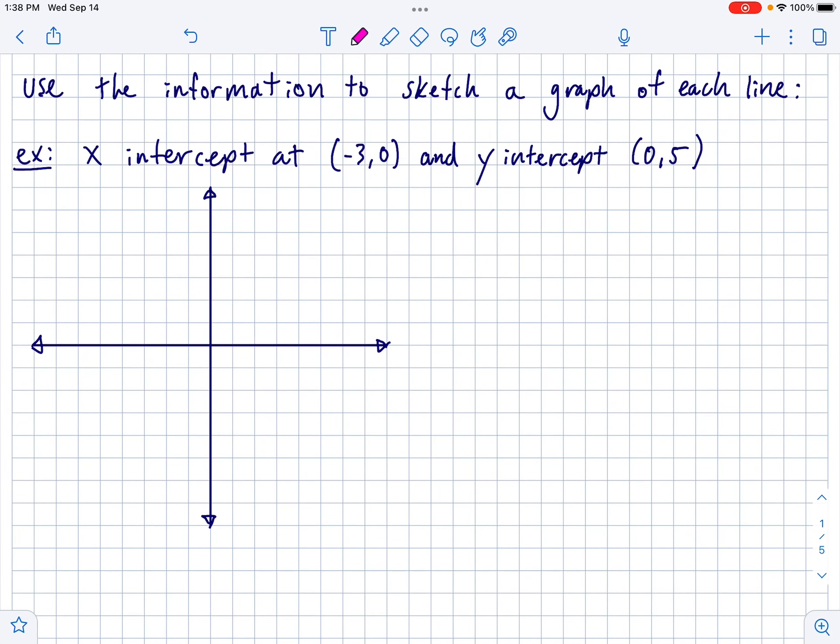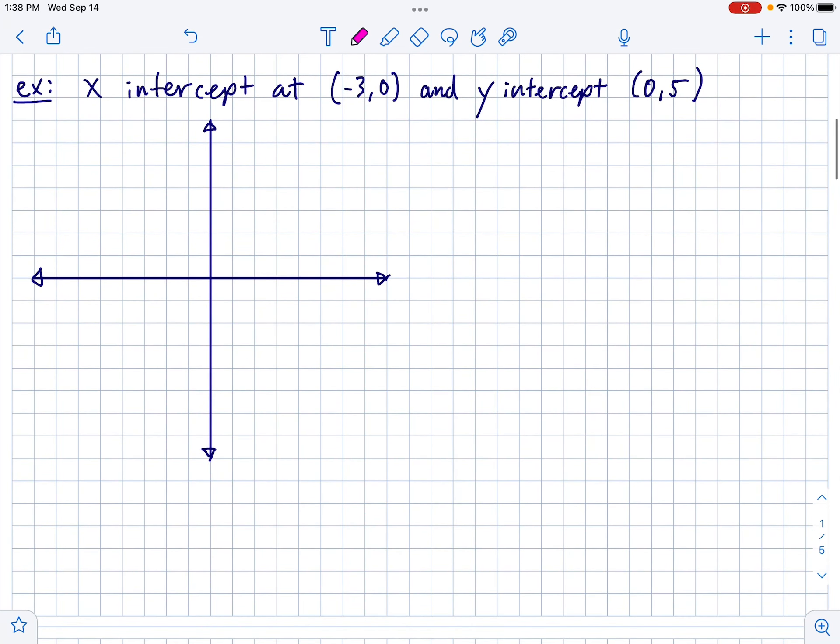So for the next three examples, you're going to use the information to sketch a graph of each line. The first one, the x-intercept is at negative 3, 0, and the y-intercept is at 0, 5. Well, I'm starting with a graph, and the x-intercept is negative 3, 0, so I'm just going to count blocks. I'm going to say negative 1, negative 2, negative 3, so this is the point, negative 3, comma, 0.